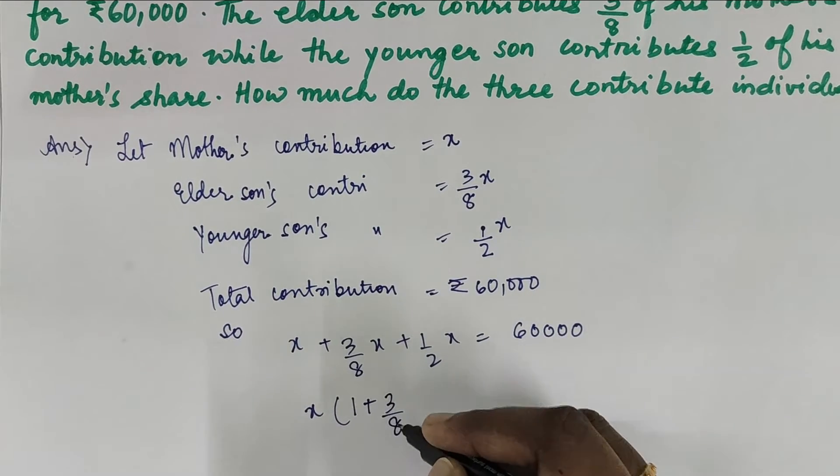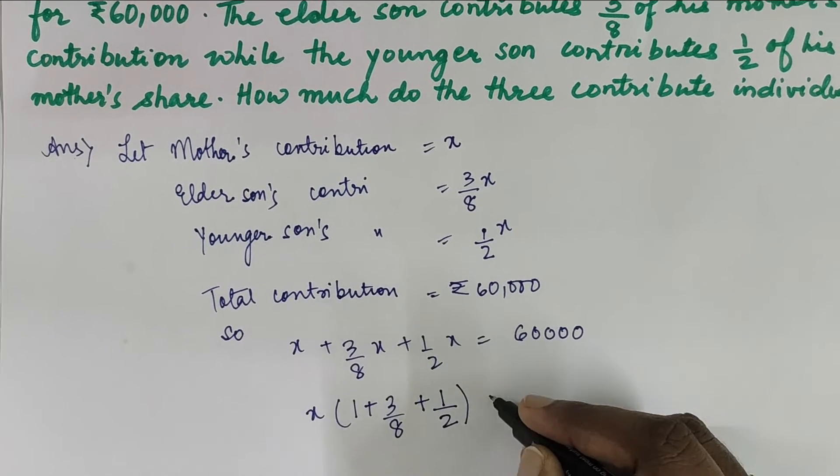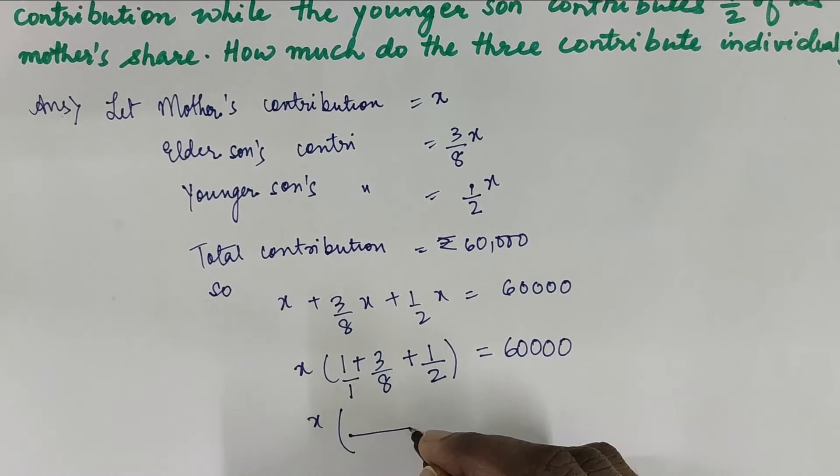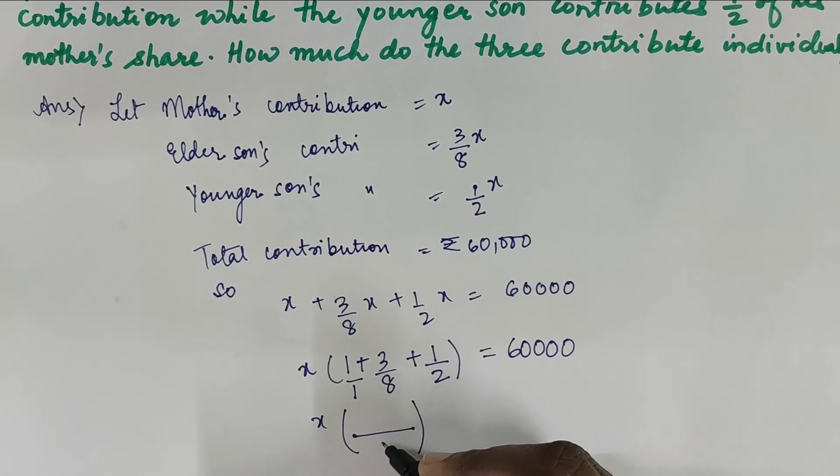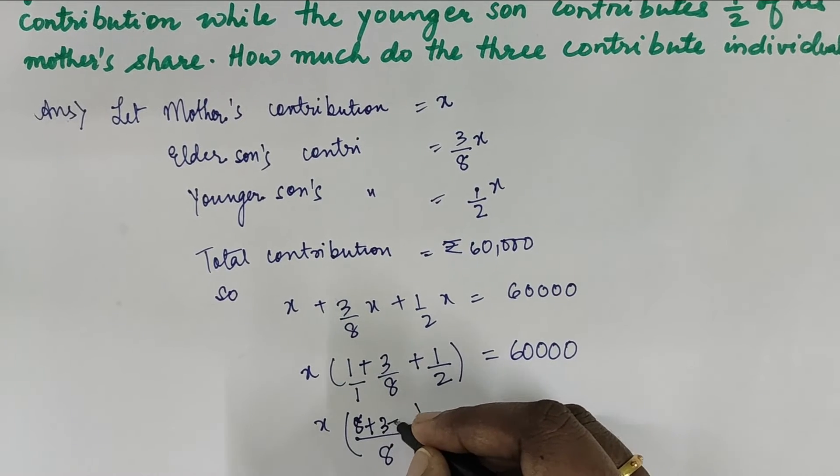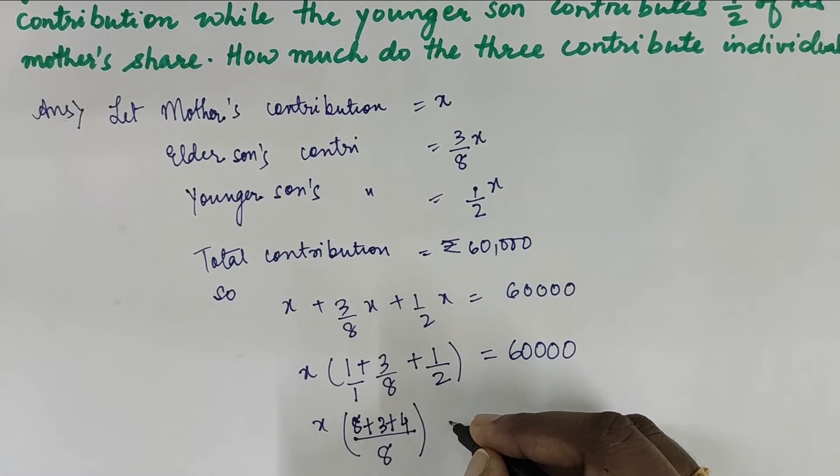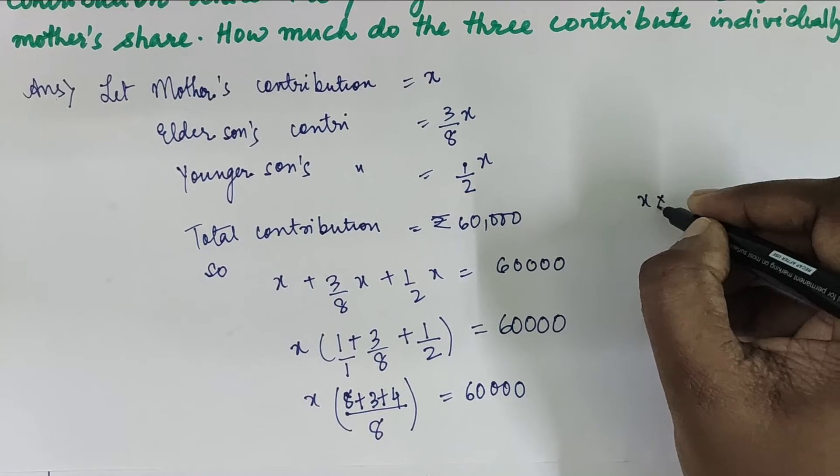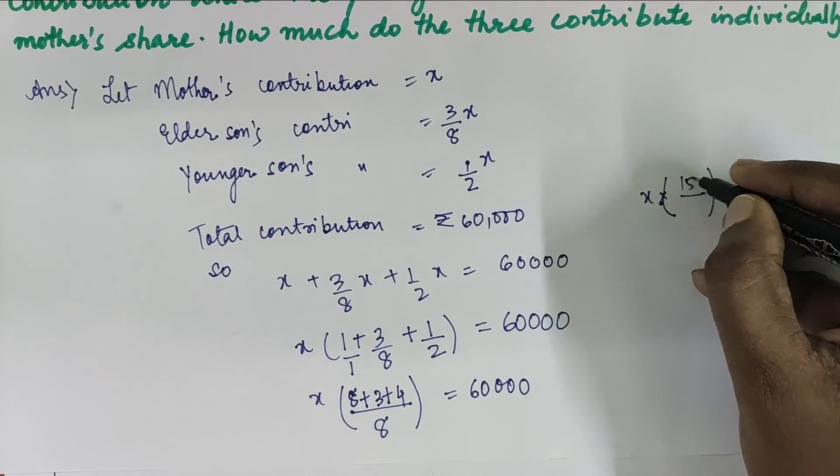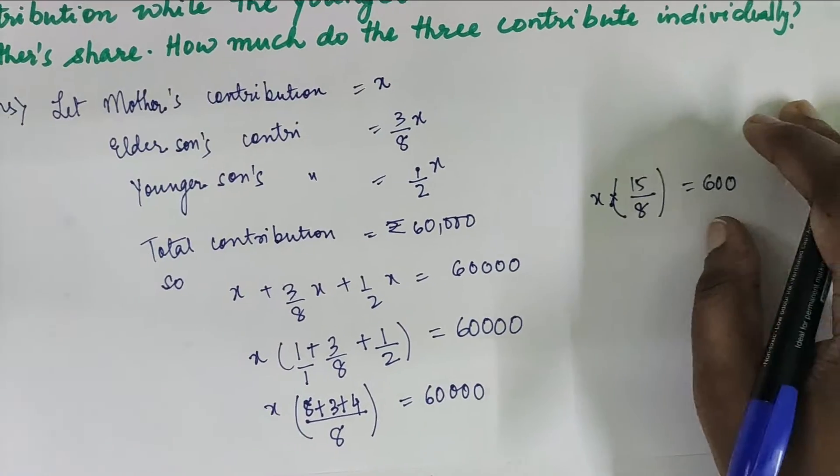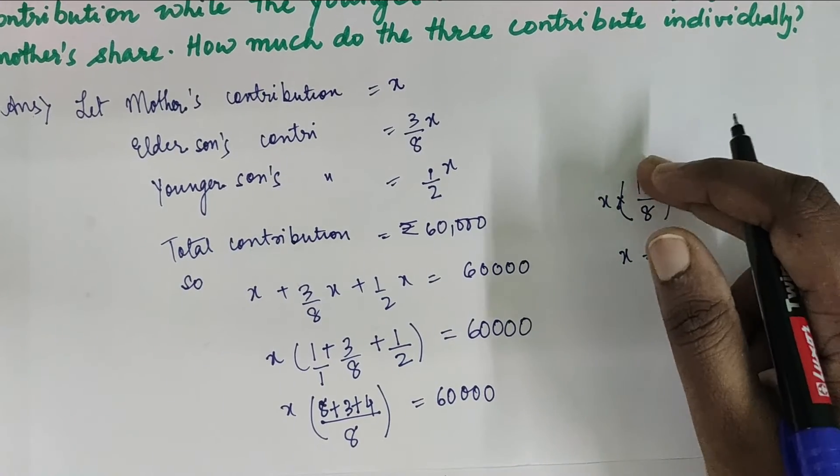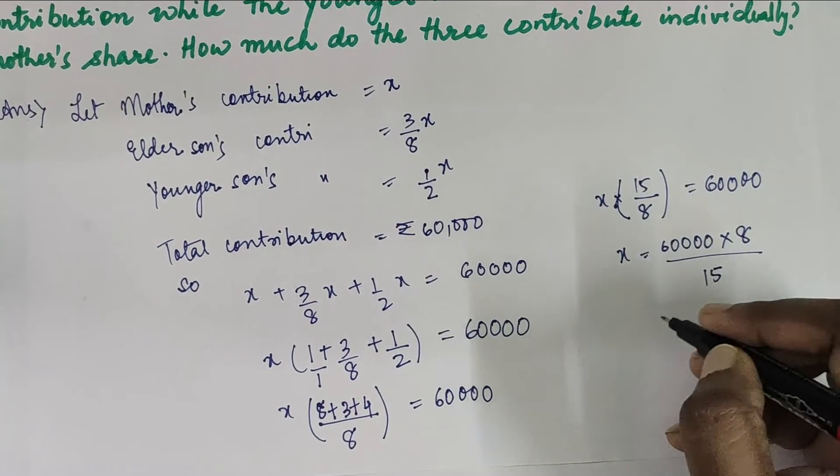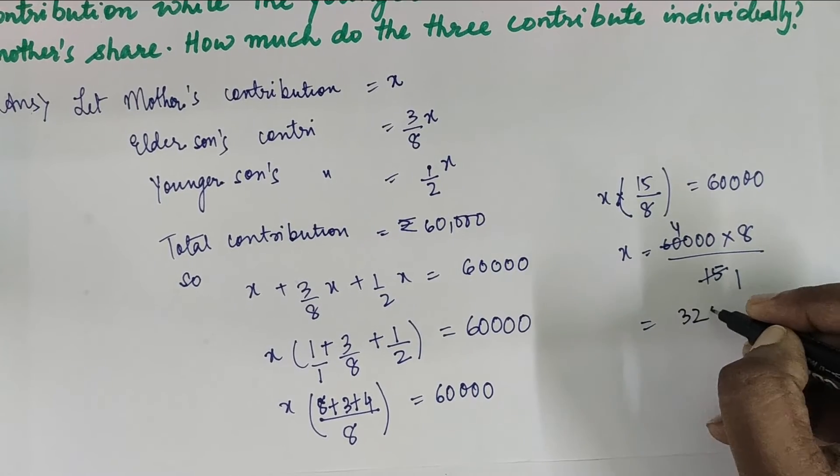Let us take x common, so we are left with 1 + 3/8 + 1/2 = 60,000. We will solve it like we already know the addition of rational numbers. We'll get LCM 8, so 8 + 3 + 4, that's 15/8 = 60,000. So x into 15/8 = 60,000. To calculate x, we will take this multiplication to the other side and it will become division or reciprocal. This 8 will go up and 15 will come down. So our final answer will be 32,000. That is the mother's contribution.